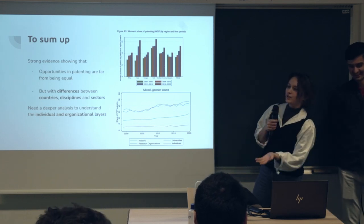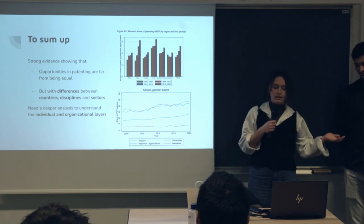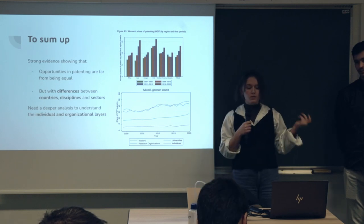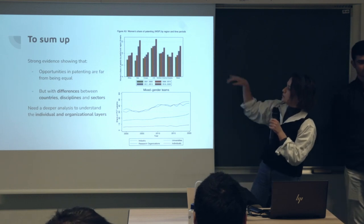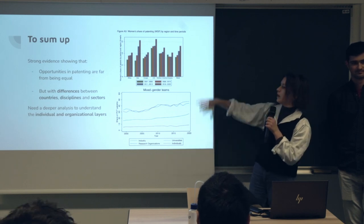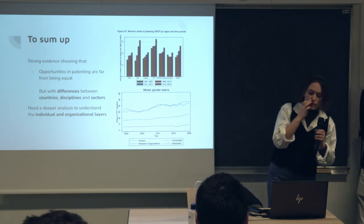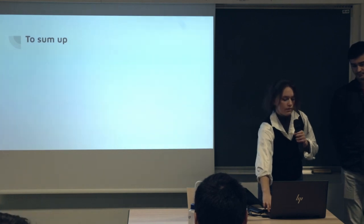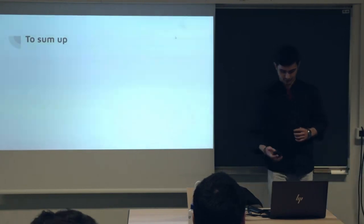As we saw, there is strong evidence showing gender inequalities in patent applications, with interesting differences between regions of the world, disciplines, and sectors. We found those two graphs interesting — they show differences between types of organization and regions of the world. This needs a deeper analysis to understand all the layers implied in those inequalities and in the methodology.